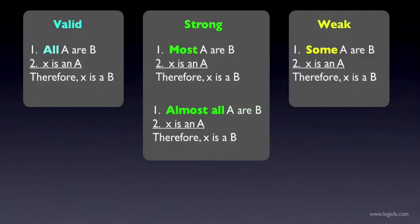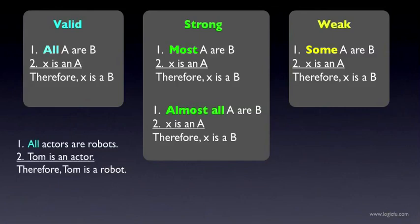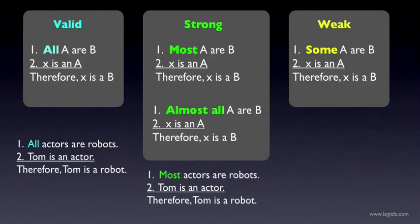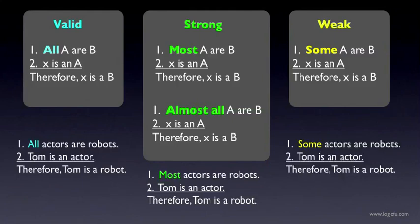Here are some simple argument forms recognized as valid, strong, and weak respectively. The forms are identical except for the highlighted words: all A are B, most A are B, almost all A are B, some A are B. An example of a valid argument of this form is: all actors are robots, Tom is an actor, therefore Tom is a robot. If we change 'all' to 'most,' we get an invalid but strong argument: most actors are robots, Tom is an actor, therefore Tom is a robot. The conclusion doesn't follow with certainty, but 'most' means enough to make it reasonable to believe the conclusion. And if we switch from 'most' to 'some,' we get a weak argument: some actors are robots. That doesn't even guarantee 50-50 odds — 'some' just means at least one actor is a robot.